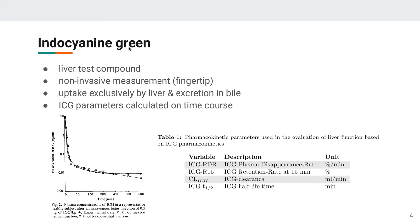Indocyanine green is a liver test compound which can be measured non-invasively by a fingertip method — it has a very nice spectroscopic property, so you can measure it by putting a light sensor on your finger and getting the spectrum out. ICG is only taken up by the liver and subsequently excreted in the bile, the excretion fluid of the liver. There is no tissue distribution in any other organs, and from the bile it's directly excreted in the feces. So it's a simple test substance, essentially testing hepatic uptake and subsequent biliary excretion.